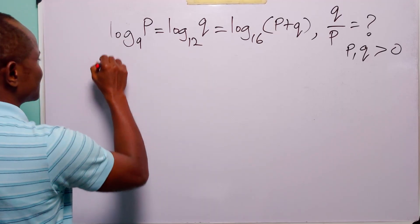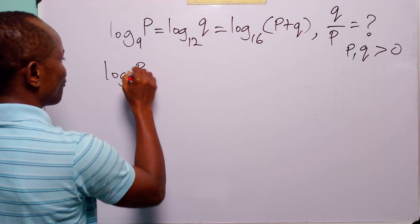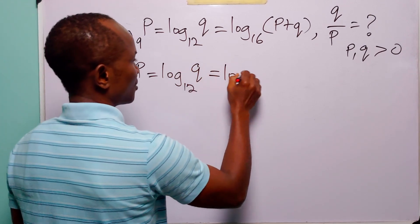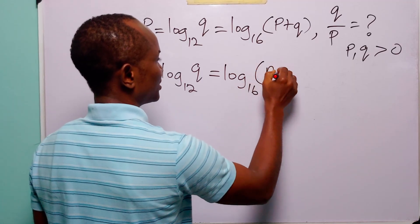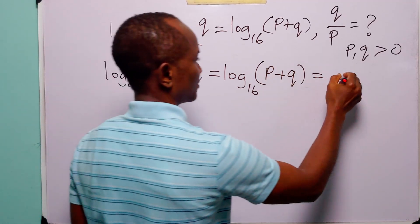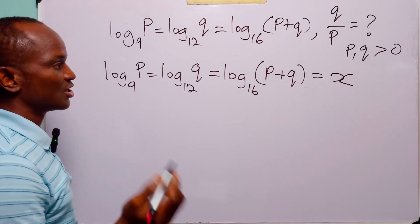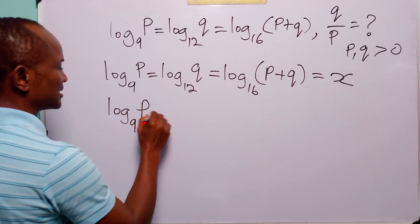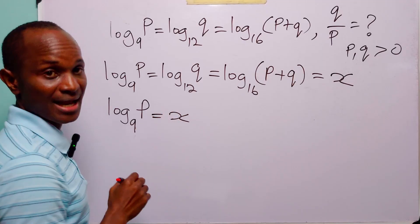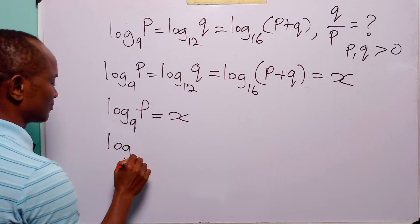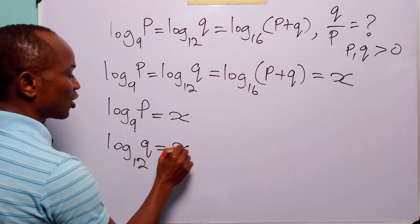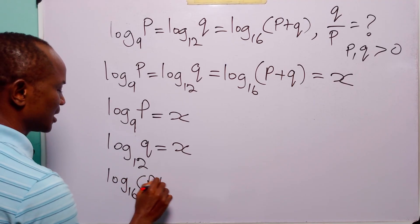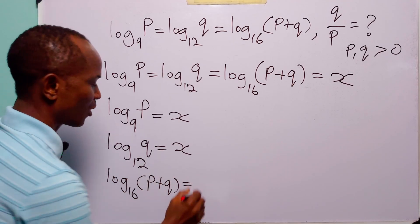To solve this problem, let log to base 9 of P be equal to log to base 12 of Q, be equal to log to base 16 of P plus Q, be equal to X. So from here we have that log to base 9 of P is equal to X, log to base 12 of Q is also equal to X, and log to base 16 of P plus Q is also equal to X.